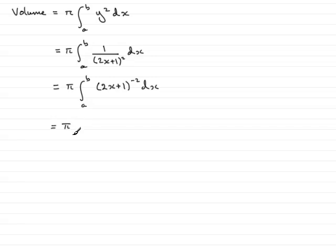Then I'll keep the pi, the constant, out the front. Now when I'm doing integration by inspection, what I notice is that this would have come from differentiating (2x plus 1) to the minus 1.